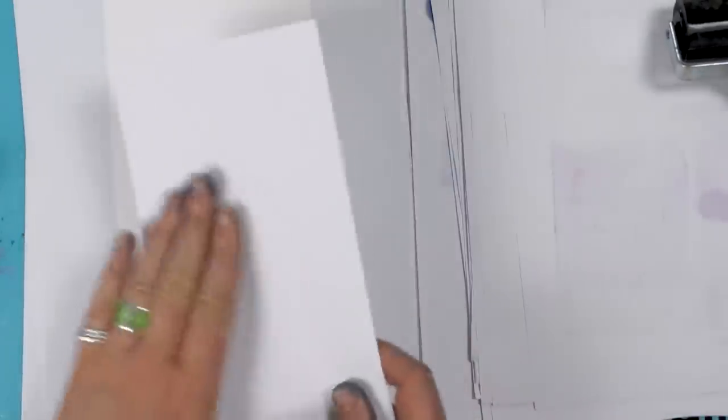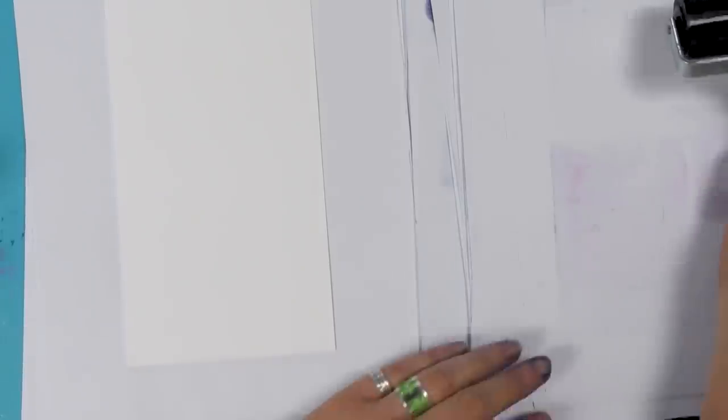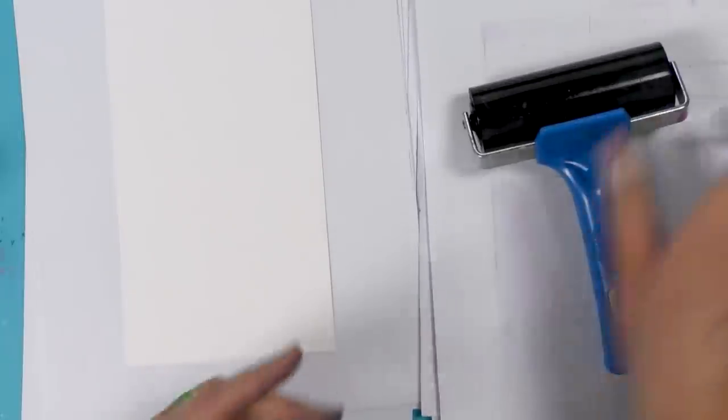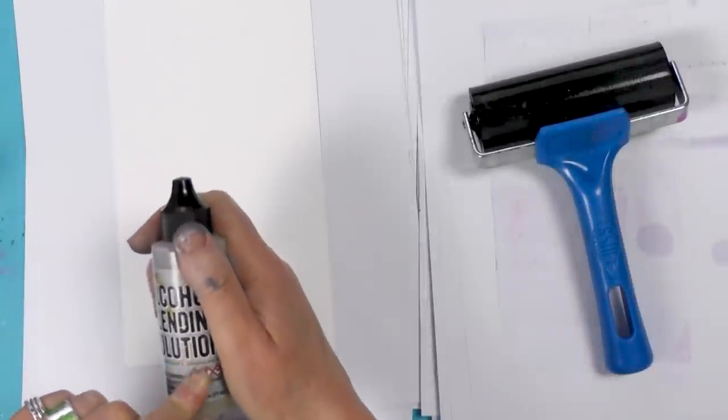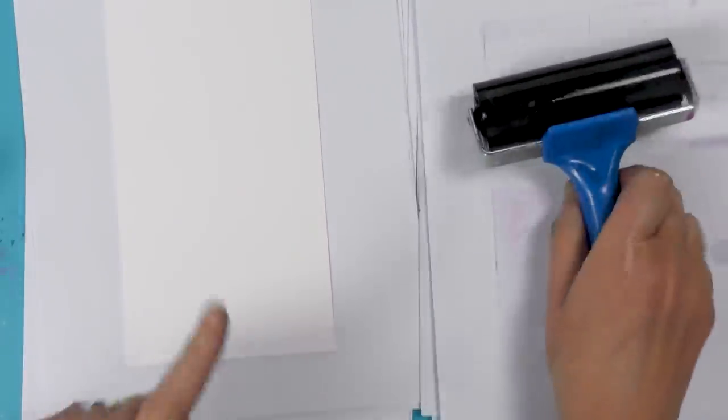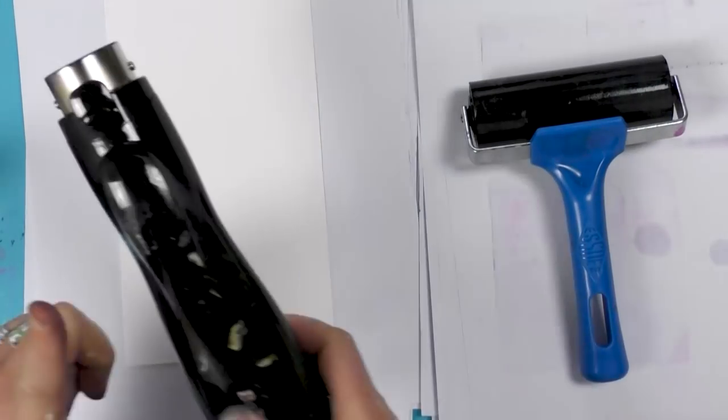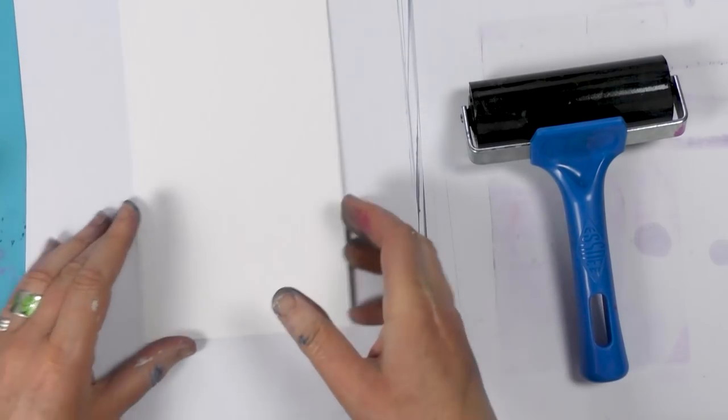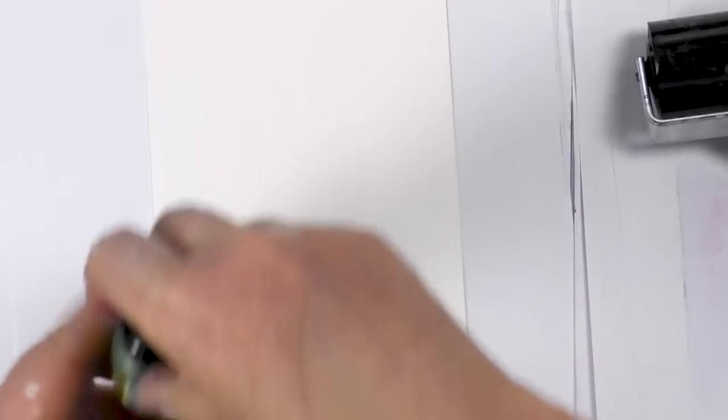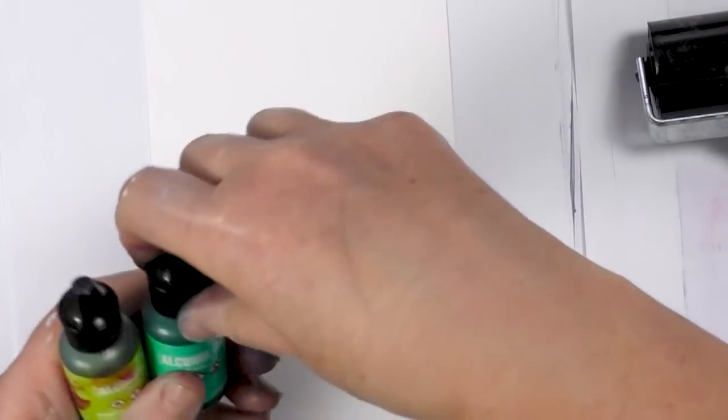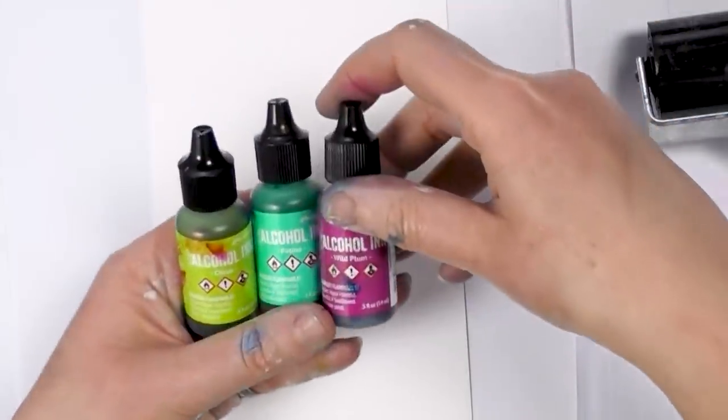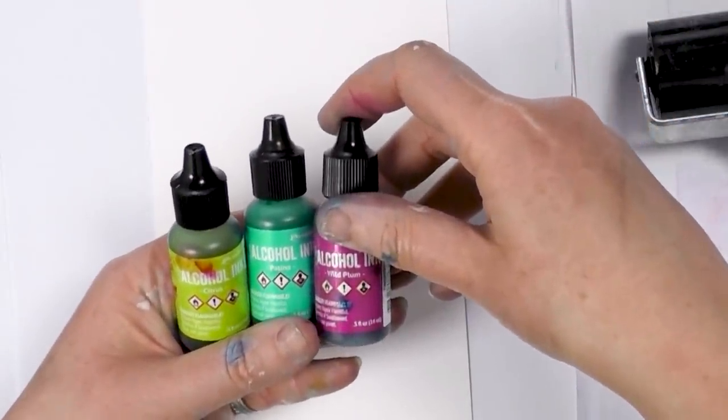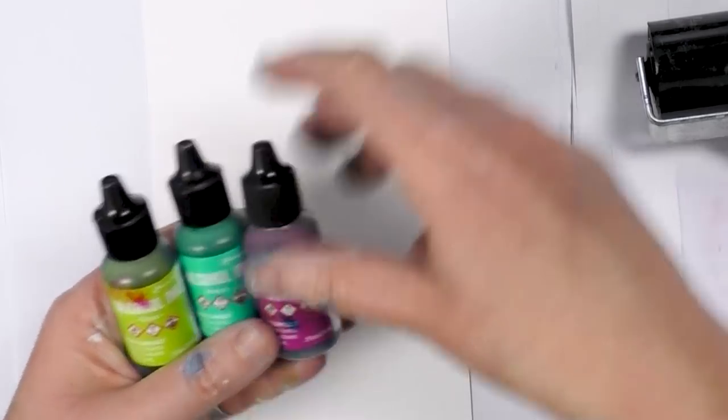We're going to stick with our Yupo this week and alcohol inks and then using our alcohol lift ink onto our multifarious card. So, we need our alcohol blending solution, our brayer, and our air blower. I'm going to go with some really nice bright colors today. We've got Wild Plum, Patina, and Citrus.